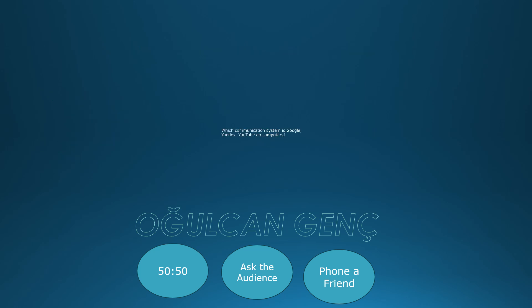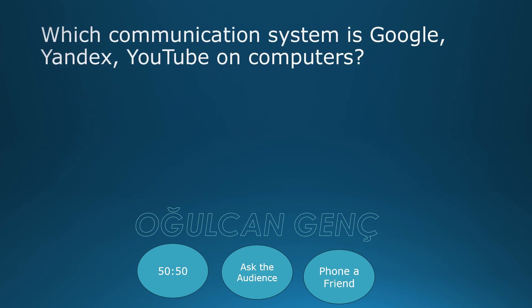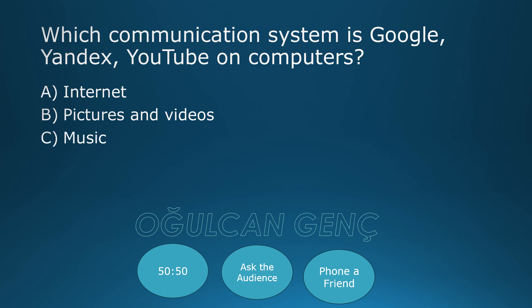Which communication system are Google, Yandex, and YouTube on computers? Options: Internet, Pictures and videos, Music, Games. Final answer: Internet. Correct answer is Internet.